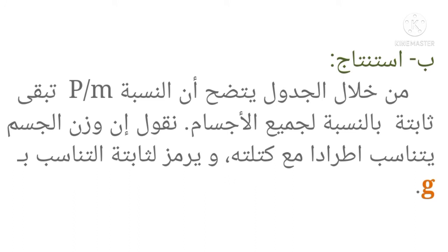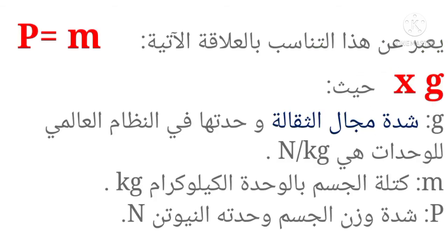استنتاج: من خلال الجدول يتضح أن النسبة P/M تبقى ثابتة، حيث جميع الأجسام أعطت نسبة تساوي عشرة. نقول إن وزن الجسم يتناسب طرديًا مع كتلته، ويُرمز لثابتة التناسب بـ G. يُعبَّر عن هذا التناسب بالعلاقة التالية: P = M × G، حيث G هي شدة مجال الثقالة، وحدتها في النظام العالمي للوحدات هي نيوتون على الكيلوغرام.